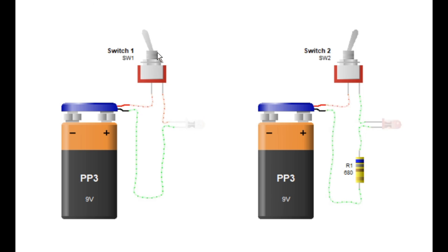First, a circuit where a red LED is connected directly to a 9-volt battery. Second, a circuit where we add a resistor in series between the LED and the battery.